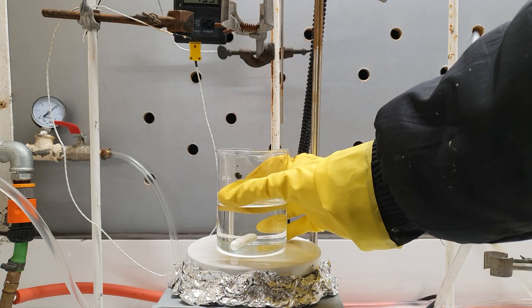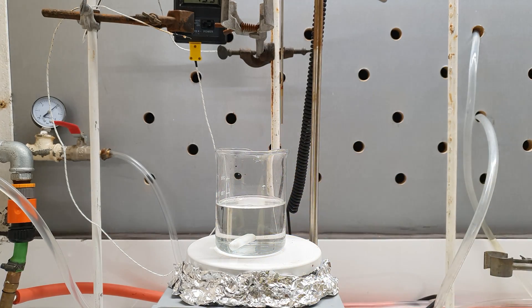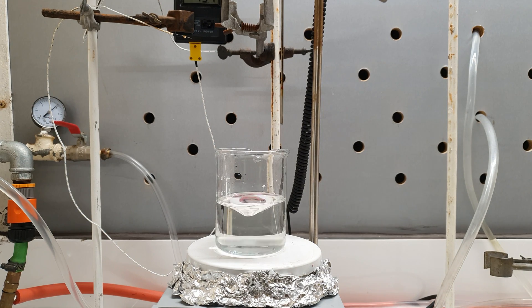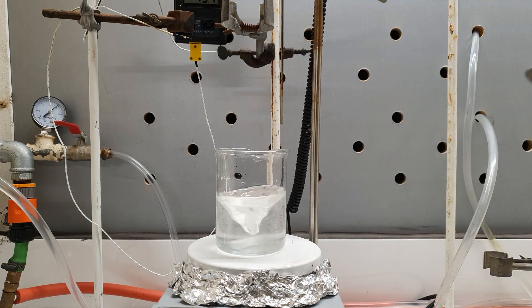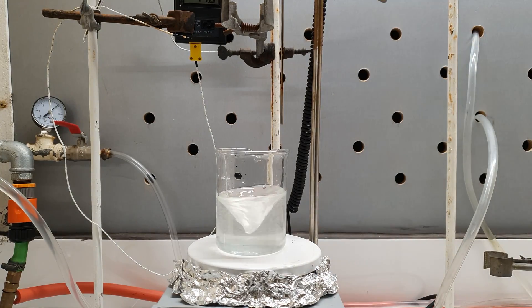The lower layer was drained in an Erlenmeyer flask and the upper water layer was placed in a beaker. Nitromethane is slightly soluble in water, so the water layer still contains some of it that can be recovered. To do this, I added sodium chloride to it until no more dissolved.